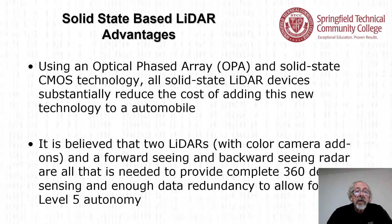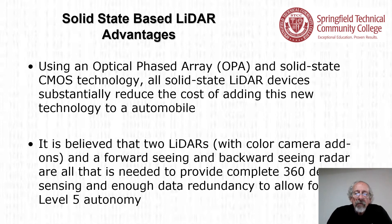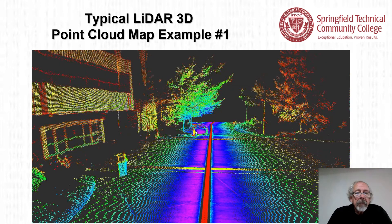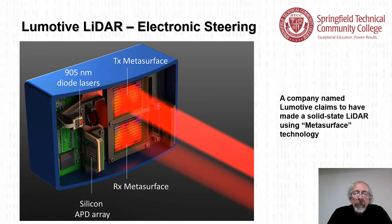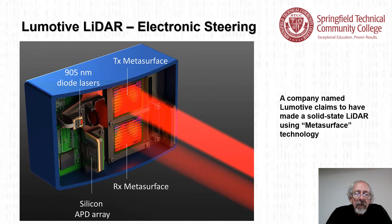Using an optical phased array, OPA, and solid-state CMOS technology, all solid-state LiDAR devices substantially reduce the cost of adding this technology to an automobile. It is believed that two LiDARs with color camera add-ons and forward- and backward-seeing radars are all that is needed to provide complete 360-degree sensing and enough data redundancy for SAE Level 5 autonomy — a totally autonomous vehicle. A company named Lumotive claims to have made a solid-state LiDAR using metasurface technology.